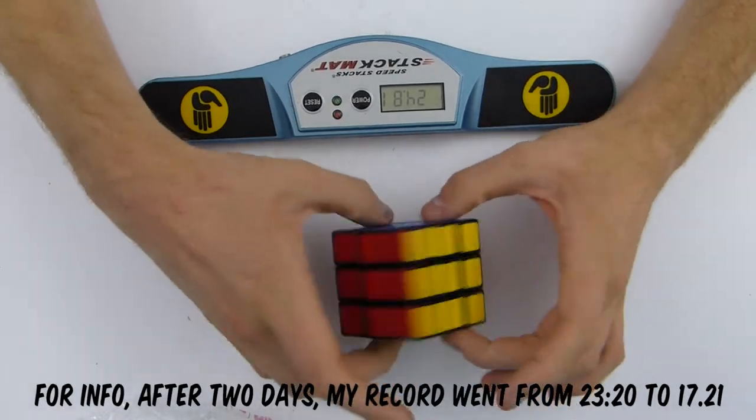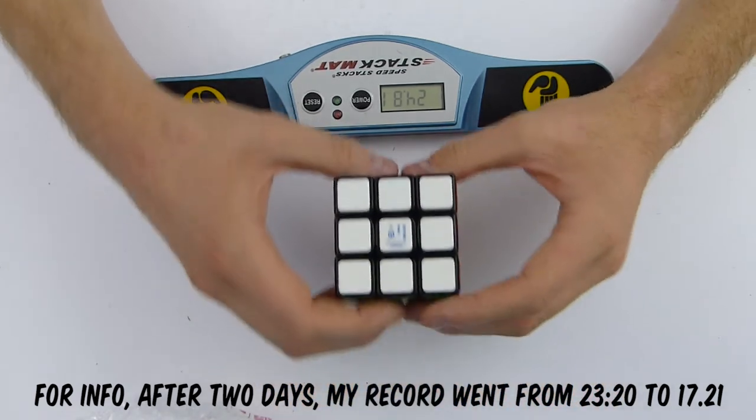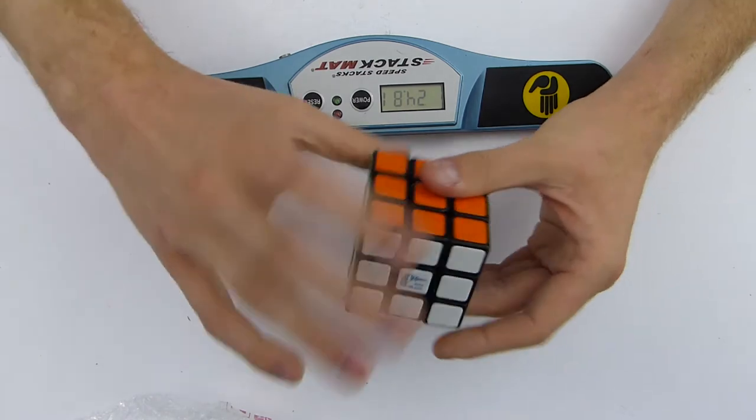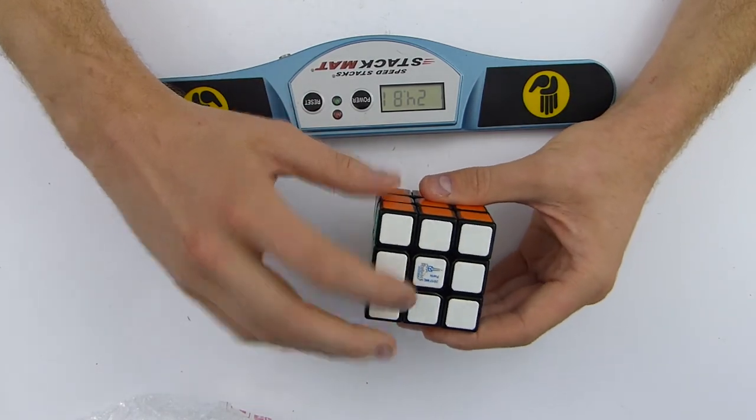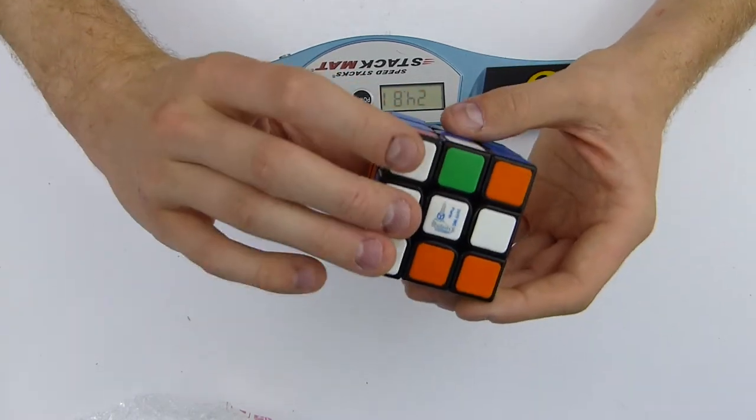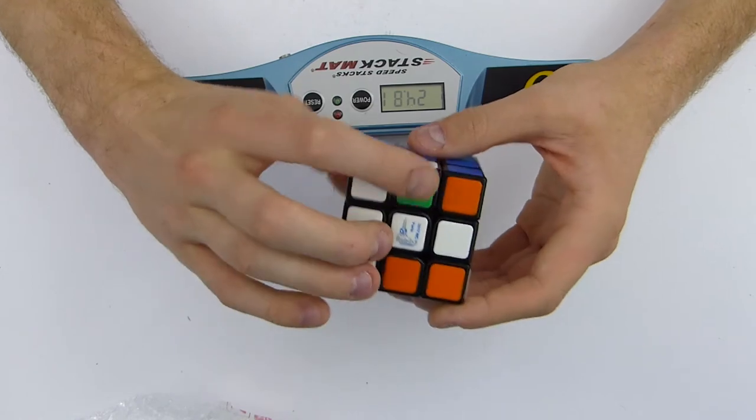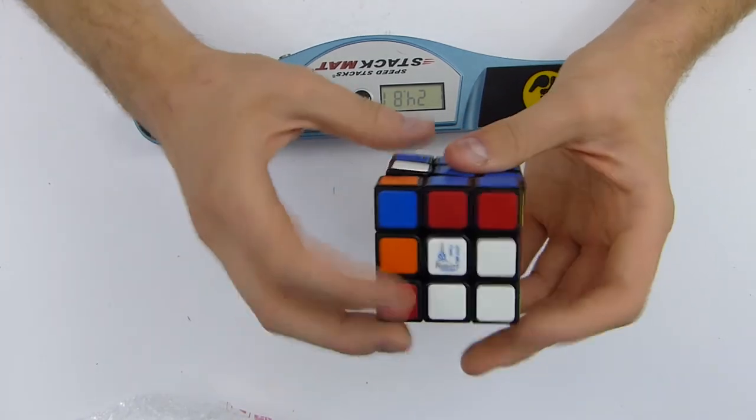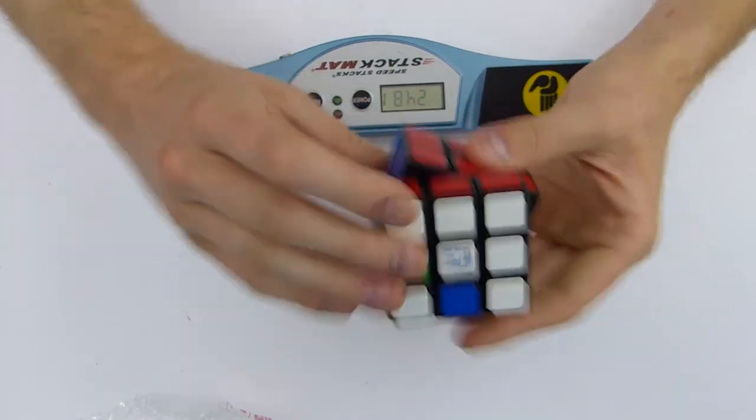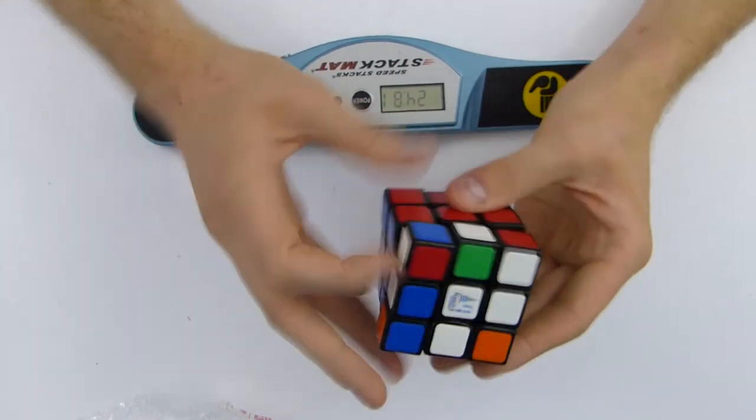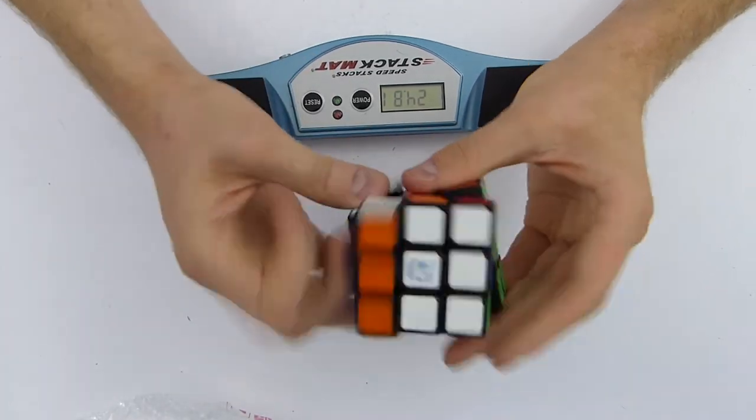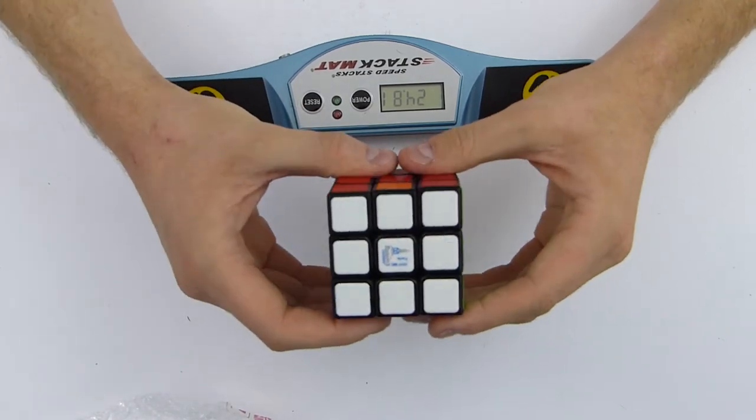Let me explain my method since, you know, this is actually the first time I actually show a speed cube on my channel. My method is actually an intuitive F2L followed by an orientation of the last layer. Except when I orient the last layer, what I do is I orient the edges first. I orient the edges first and then I take care of the corners. That's sometimes a two-step situation.